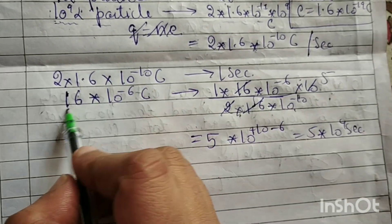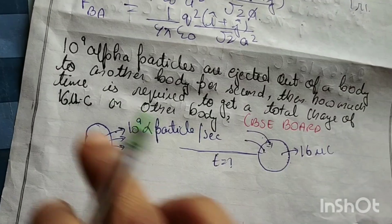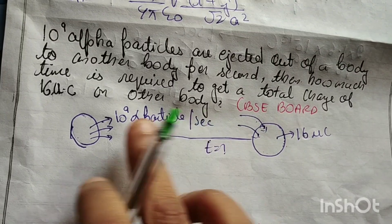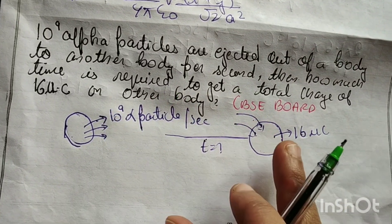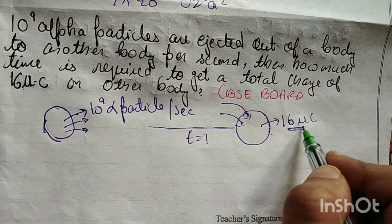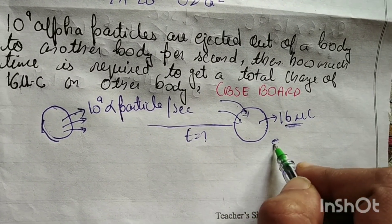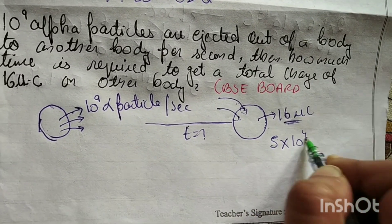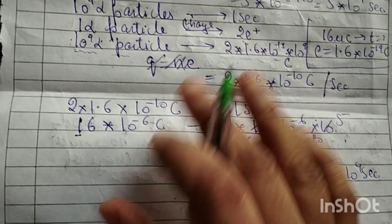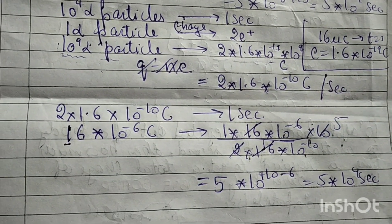So this body, ejecting 10 to the power 9 alpha particles per second, transfers charge to the other body. For the other body to acquire 16 microcoulombs, the time required is 5 into 10 to the power 4 seconds. So students, hope you liked the video. Please don't forget to like, subscribe, and share my channel. Thank you for watching.